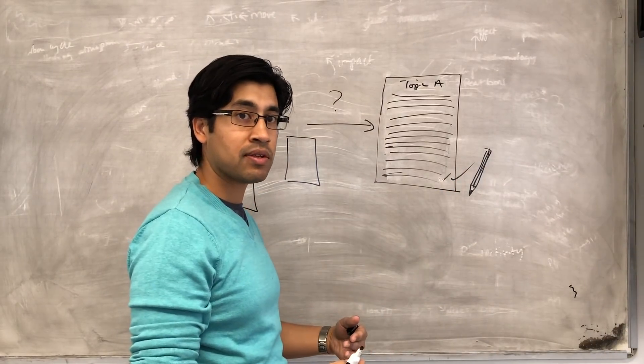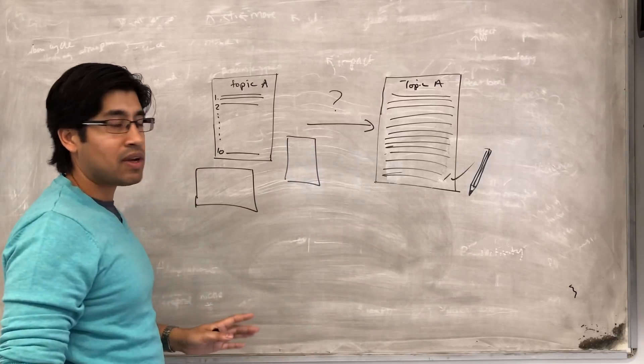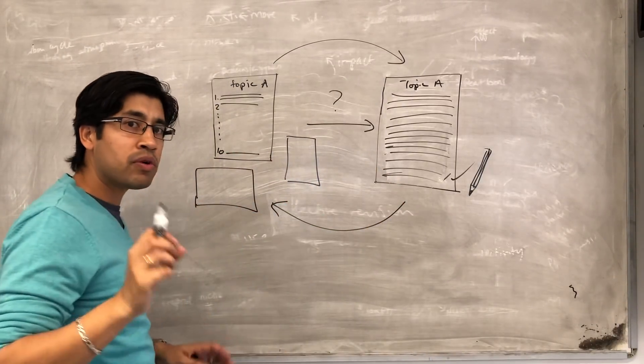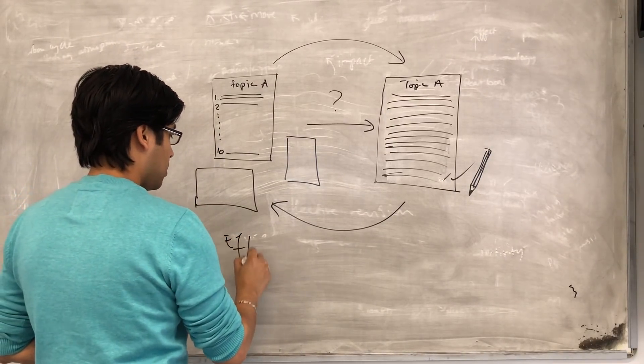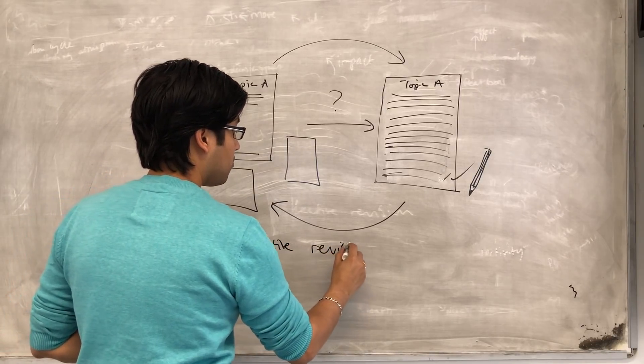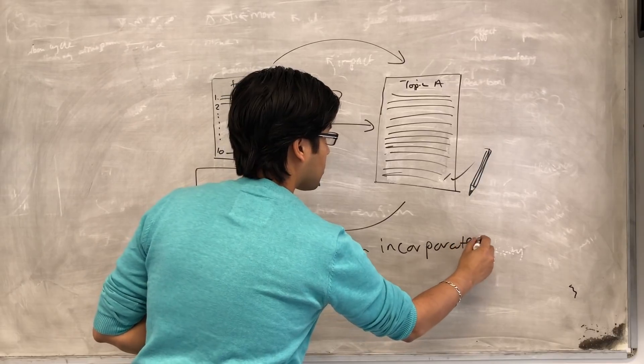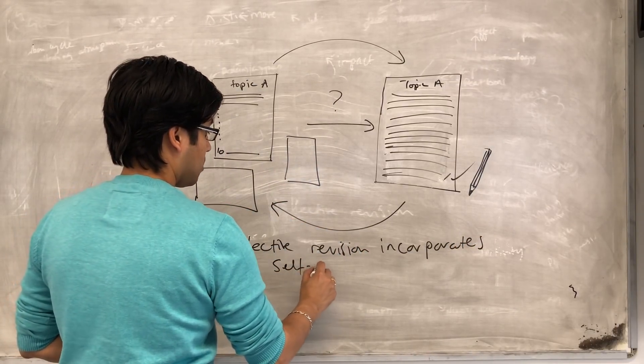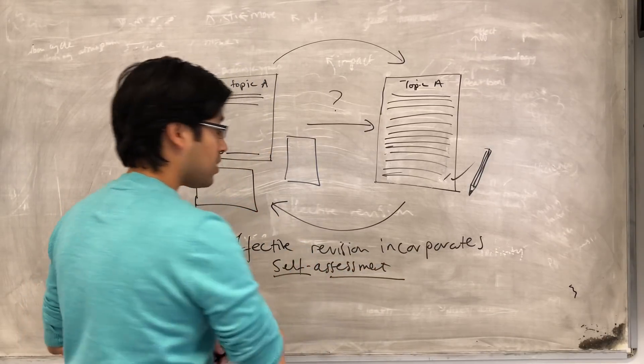So, this is what I think effective revision is. Write it down here. So, the golden rule is this. The golden rule is effective revision incorporates self-assessment.